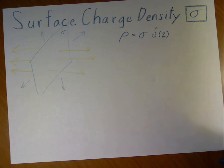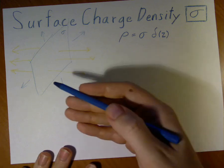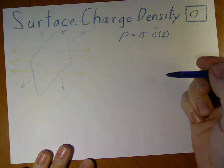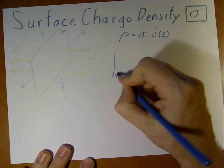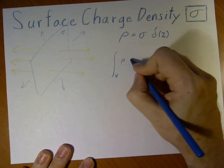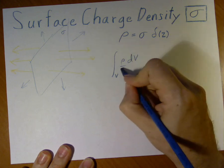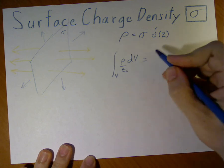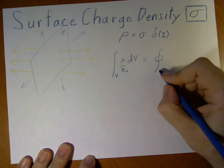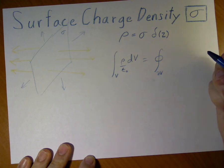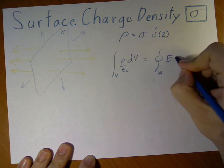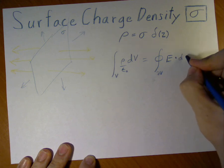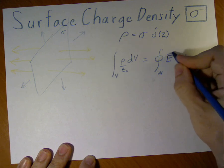Now, to start this problem, we'll first write out Gauss's law, which is volume integral rho dV over epsilon naught equals surface integral of the electric field dot area element. These are both vectors.